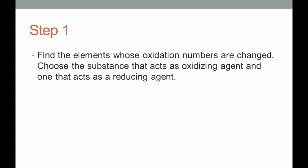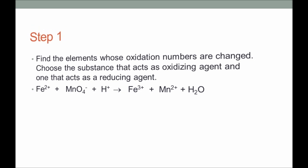Step one: find the elements whose oxidation numbers have changed. Choose a substance that acts as an oxidizing agent and one that acts as a reducing agent. Today we are going to see the example of the reaction between Fe²⁺ and manganate ion MnO₄⁻ reacting in an acidic medium.